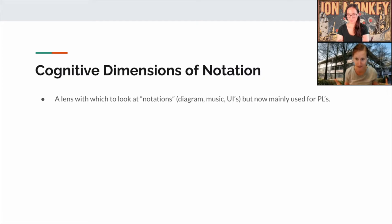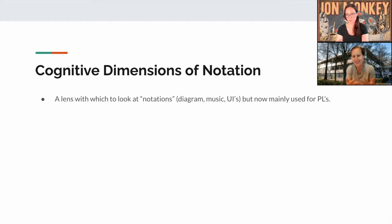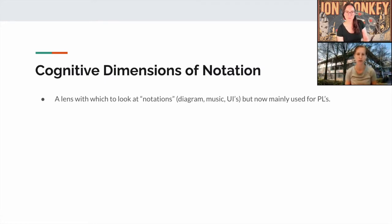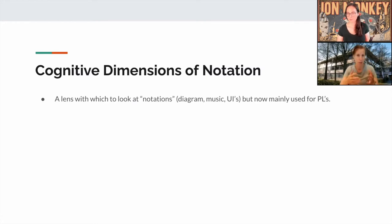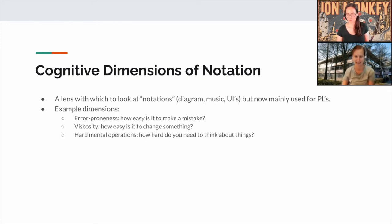So what are cognitive dimensions of notation? The CDN framework, as it's commonly called, is a lens to look at notations. Notations here is very broad — the framework was initially designed to look at any sort of notation: diagrams, musical notation, UIs. But over time, CDN became more and more applied towards programming languages, so the name is now a bit of a misnomer.